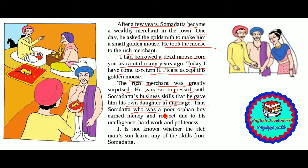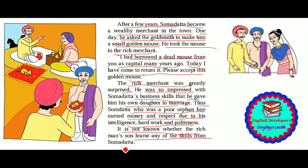He was so impressed with Somdatta's business skill that he gave him his own daughter in marriage. Somdatta, who was a poor orphan boy, earned money and respect due to his intelligence, hard work and politeness. It is not known whether the rich man's son ever learned any of these skills from Somdatta.